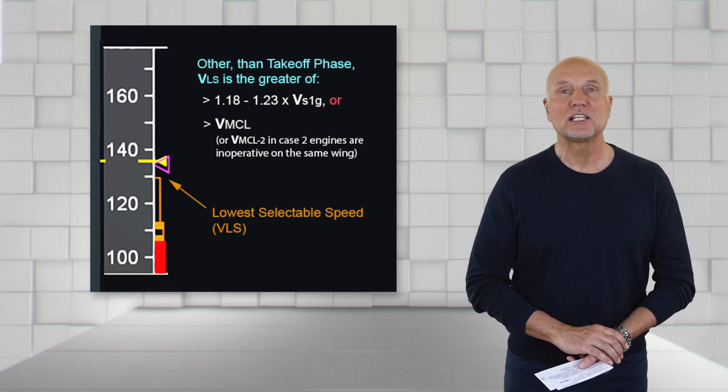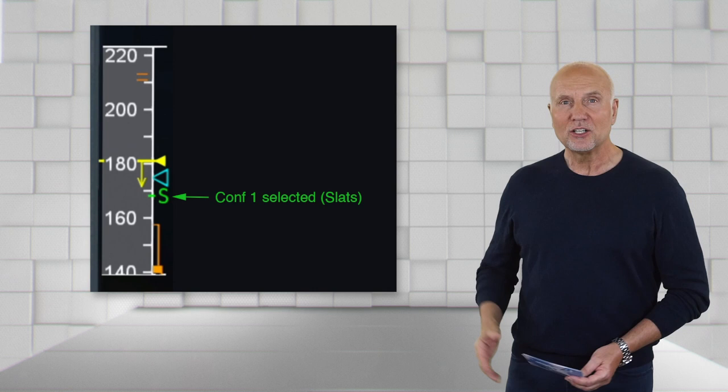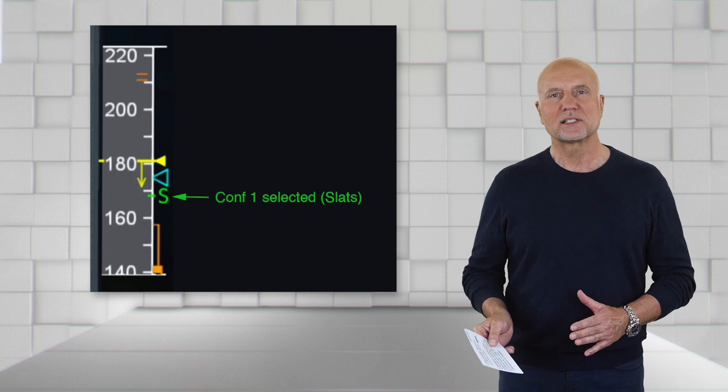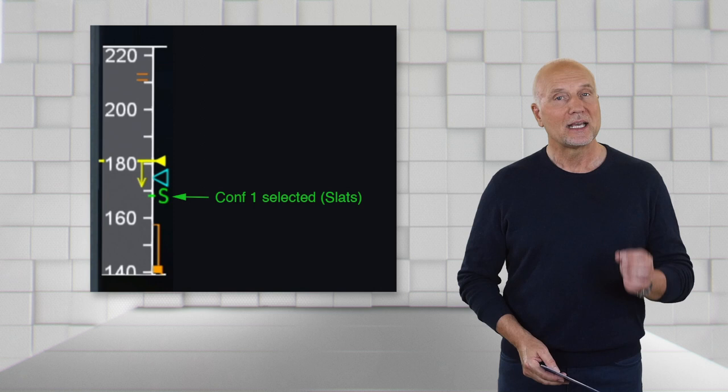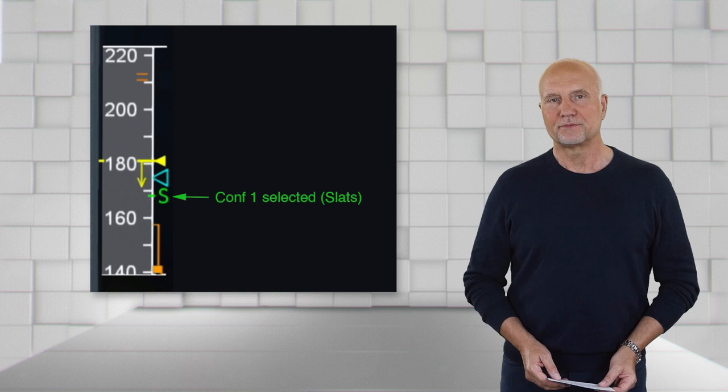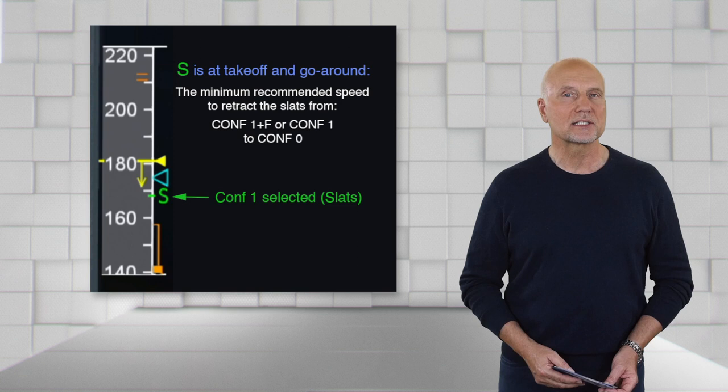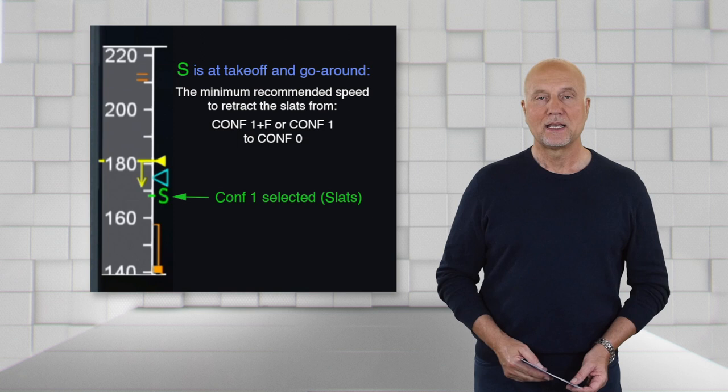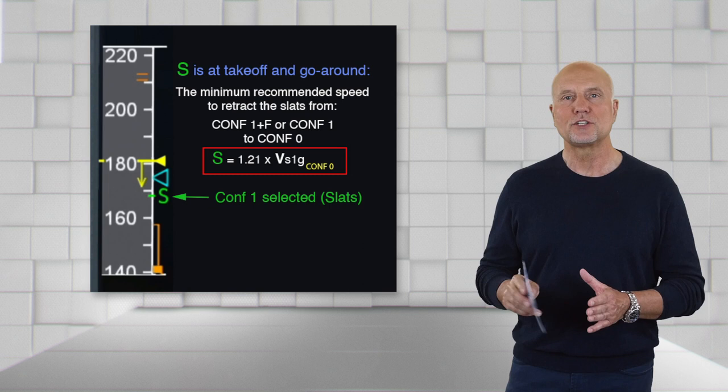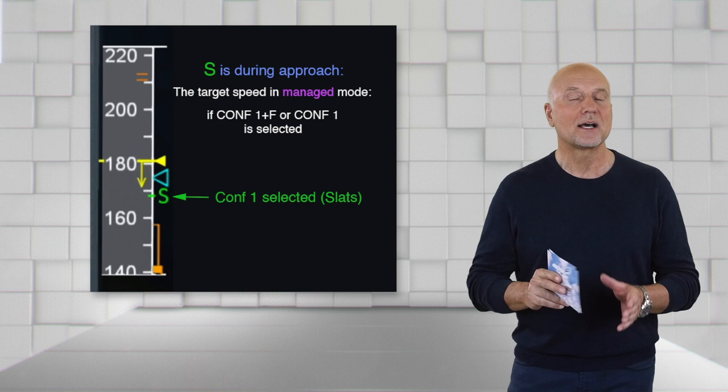Let's have a look on the speed scale and see what happens the moment we select the flap lever to config 1. The green dot speed disappears and a green S appears. In case config 1 plus F would be your takeoff configuration and the flap lever is set to position 1 on the ground, S will be initially not displayed but will appear three seconds after liftoff. After takeoff or in case of a go around, S symbolizes the minimum recommended speed for slats retraction. The safety margin from S speed is 1.21 times VS1G for configuration zero. During approach and in managed speed, S becomes the target speed.